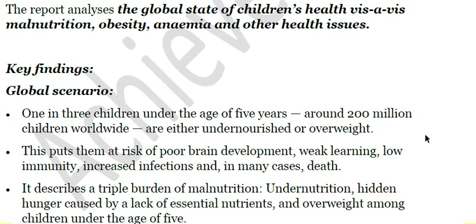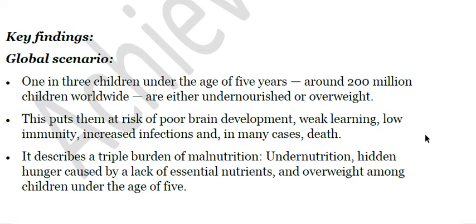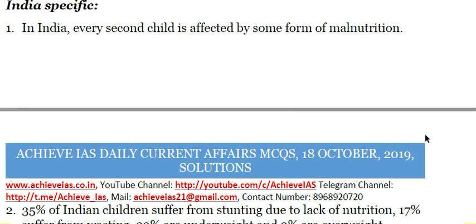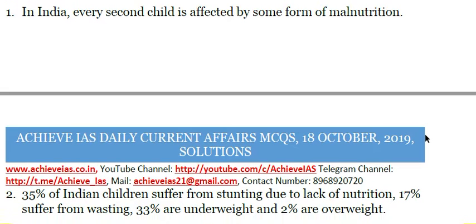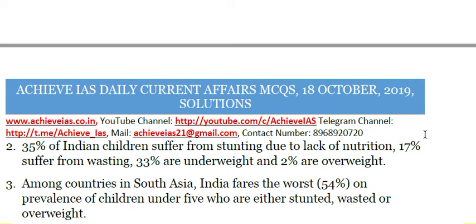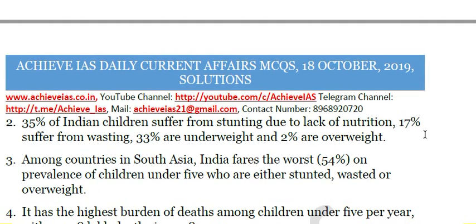Key findings: one in three children under age five — around 200 million children worldwide — are either undernourished or overweight, putting them at risk of poor brain development, weak learning, low immunity, increased infections, and in many cases death. The report describes a triple burden of malnutrition: under-nutrition, hidden hunger caused by lack of essential nutrients, and overweight among children under five.